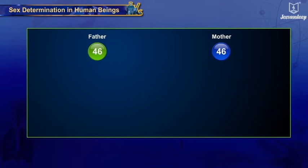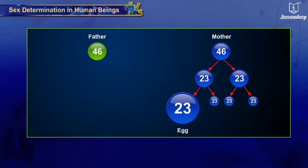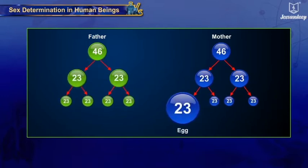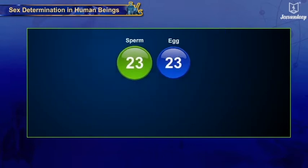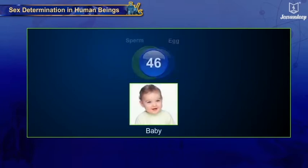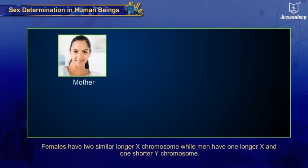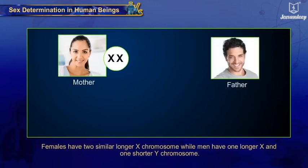The egg from the mother contains half of 46, that is 23 chromosomes, and the sperm from the father carries the other half, that is 23 of 46 chromosomes. Together, the baby has all 46 chromosomes. Females have two similar longer X chromosomes, while men have one longer X and one shorter Y chromosome.